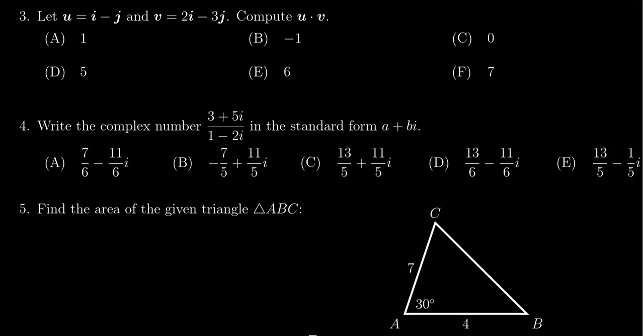In this video, we provide the solution to question number three for practice exam number three for Math 1060. We're given two vectors, u equals i minus j and v equals 2i minus 3j, and we're asked to compute the dot product between these.